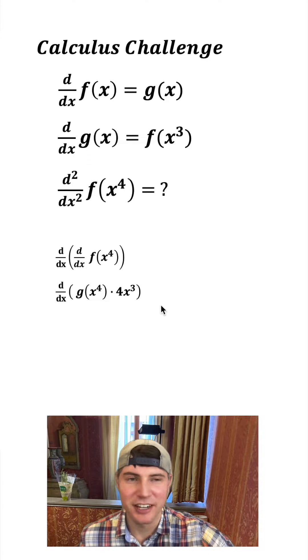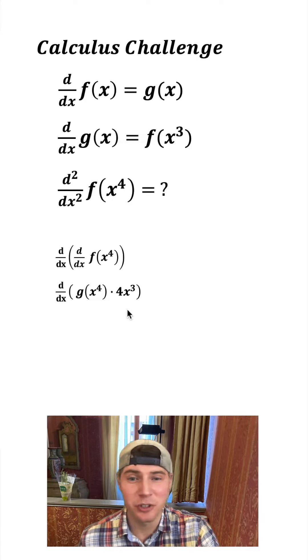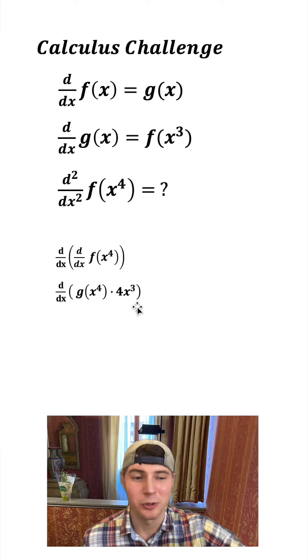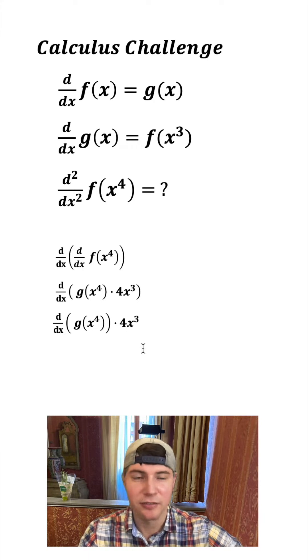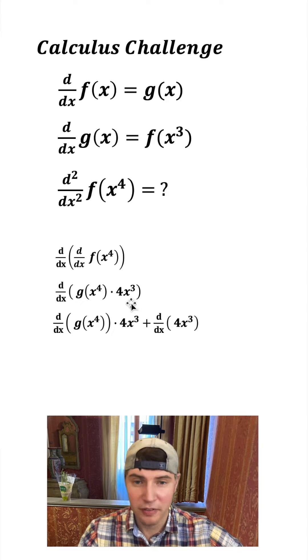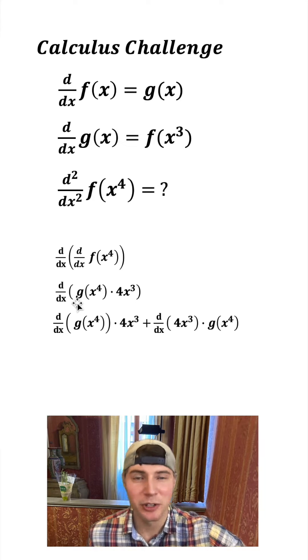So now we gotta take the derivative of what's inside here. Unfortunately, it is a product of two functions. So we have to use the product rule. So we're gonna do the derivative of this first function and leave the second function alone, plus the derivative of the second function multiplied by the first function left alone.